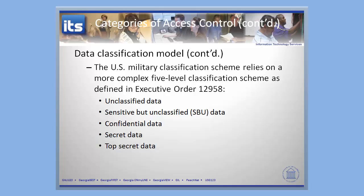The second category is all those things that are excluded or exempt from the open records law — personally identifiable information, FERPA, HIPAA data — those types of sensitive information I want to spend my time protecting and focusing on. That's where we have built our data classification model within USG.